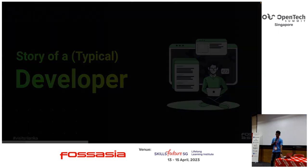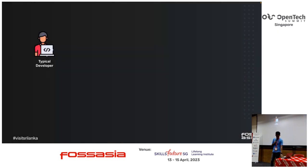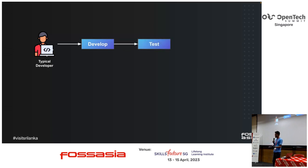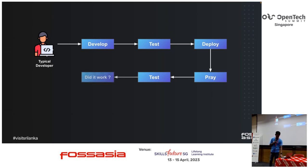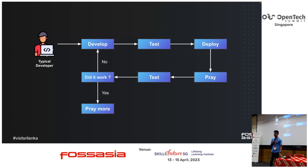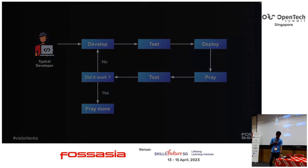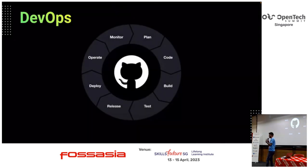Let me tell you a story of a typical developer. As a typical developer, we used to develop applications. Then we do some manual testing locally on our PCs. Then we deploy — then we used to pray to make the deployment successful. Then we do some testing on the deployed environment. If it didn't work, we had to go back to the development stage. If it worked, we had to pray more to keep the application running successfully. This is the saddest lifecycle of a typical developer, where CI/CD never existed. And that's where DevOps came into the picture.